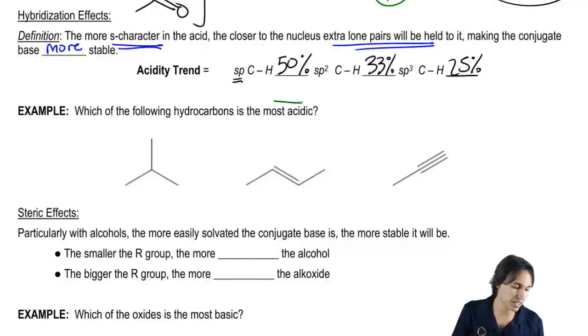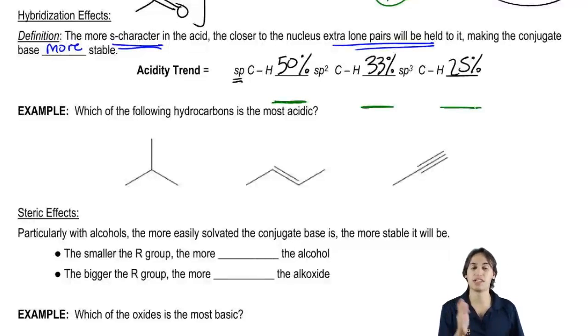I want you to draw in the pKa's so you can remember what they are and you can see how this trend is affected. So what was the pKa of an sp hybridized C-H? It was 25.